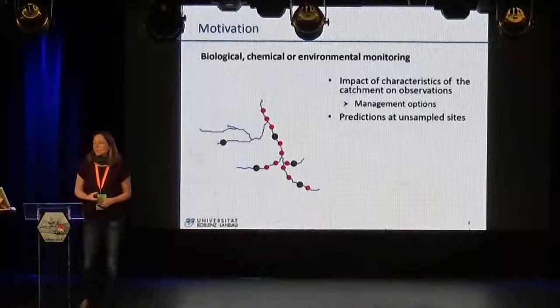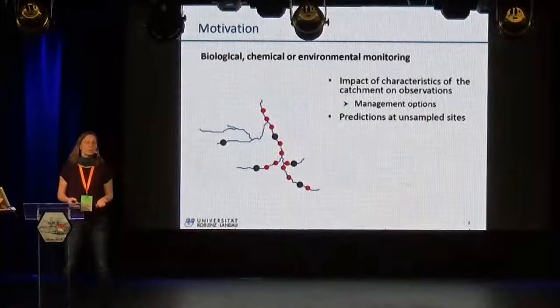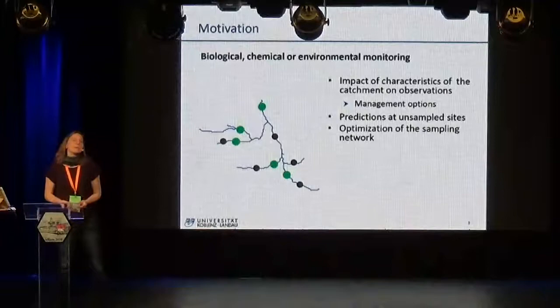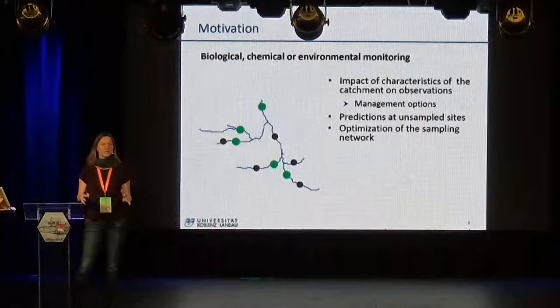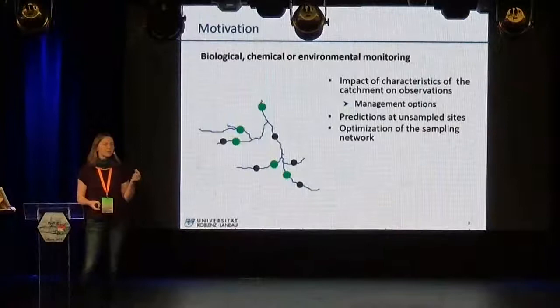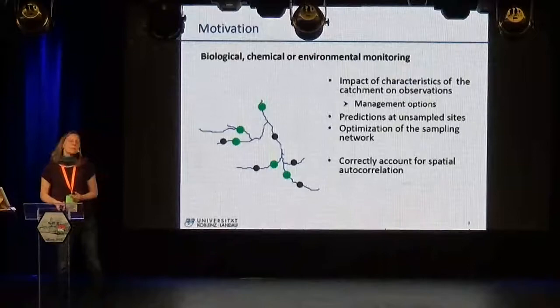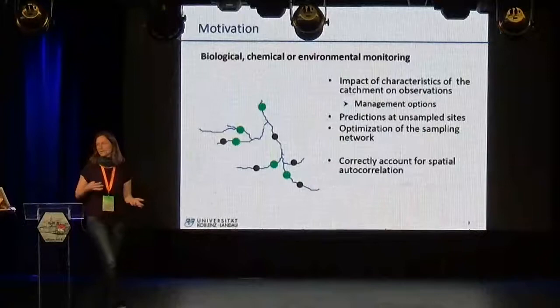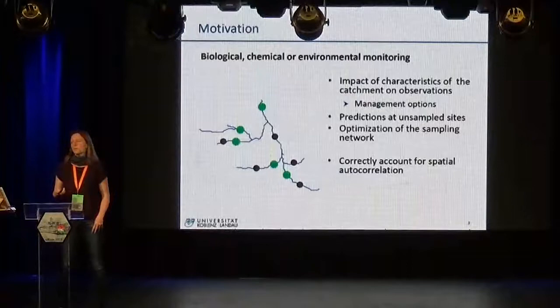And maybe we also want, if we have prepared a regression model, to do predictions on sites where we don't have measurements. Maybe our task is: we have a certain network of sampling sites and we would like to know where we learn most from — where can we improve our statistical models the most with new data? And to do this correctly, we have to take into account that this is spatial data, so there is spatial autocorrelation, and we should account for this in the correct way.